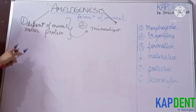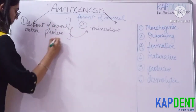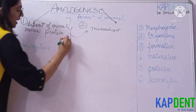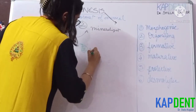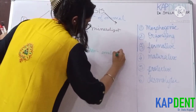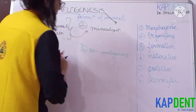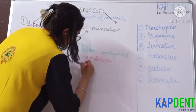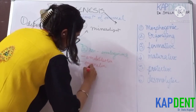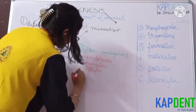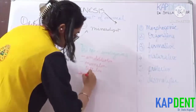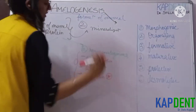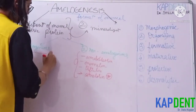The enamel matrix proteins can be divided into two main groups: number one, the amelogenins, and number two, the non-amelogenins, which further consist of ameloblastin, enamelin, tuftelin, and recently one more protein has been reported which is amelotin. These proteins constitute your non-amelogenin group.